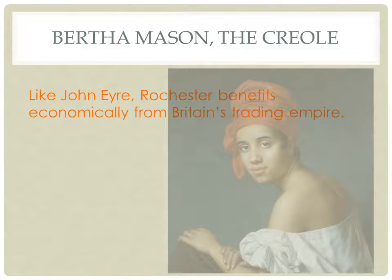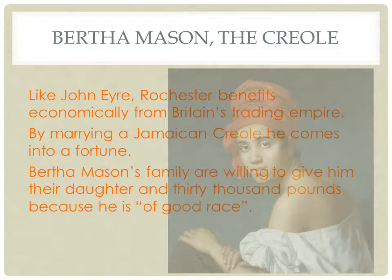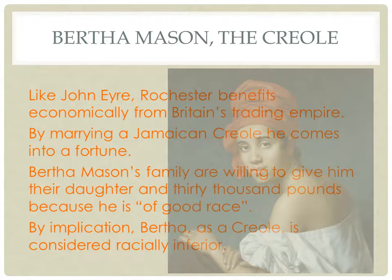Rochester benefits economically from Britain's trading empire, but in a different way from John Eyre. Rochester gets money by marrying a Creole woman, whereas John Eyre earned it in the wine business. Through marrying a Jamaican Creole, Rochester comes into a fortune. The Mason family are willing to give him their daughter and thirty thousand pounds because he is described as being 'of good race' — the clear implication being that Bertha, as a Creole, is racially inferior.